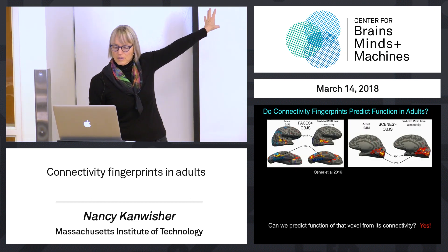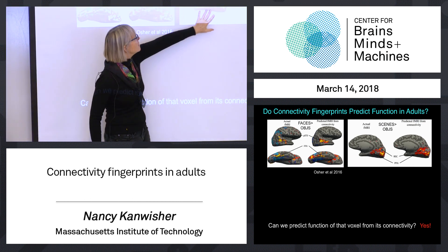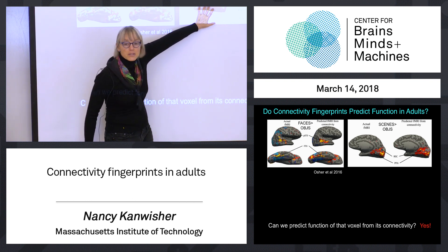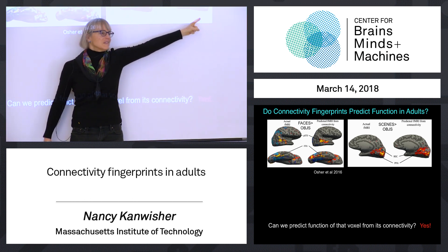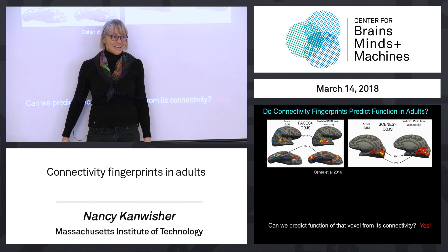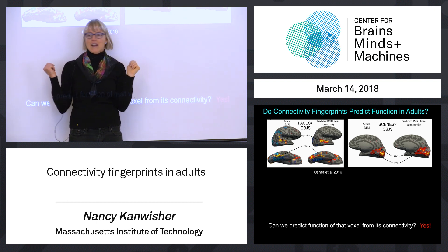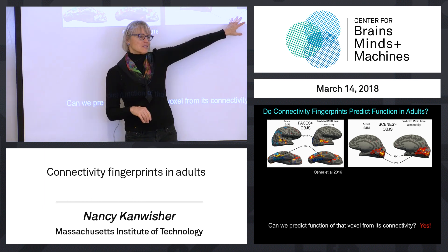Here is doing the same thing for scenes — functional selectivity, PPA, RSC, functional selectivity for scenes measured with fMRI, and the predicted functional pattern from the same subject with just tractography alone. It's pretty good. Now, I was dissing diffusion tractography — it sucks, it has all these problems and ambiguities. So how could it work so well?